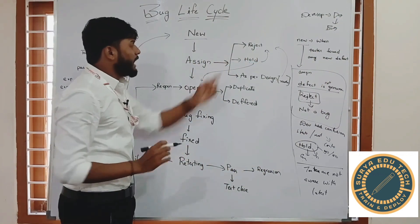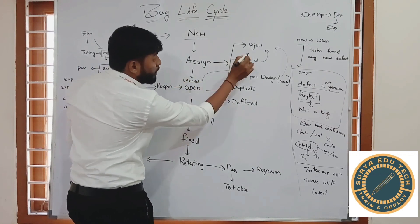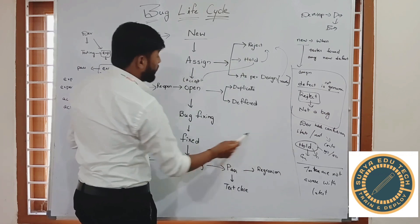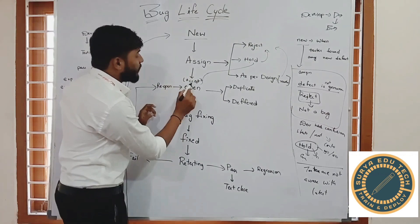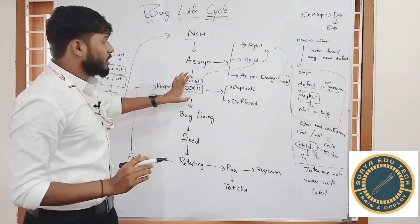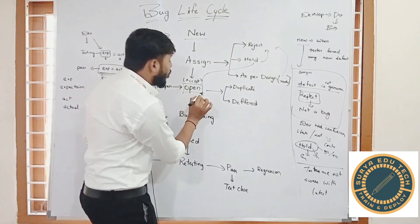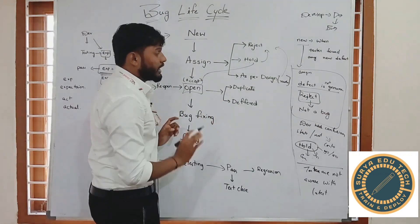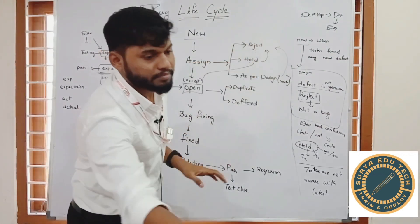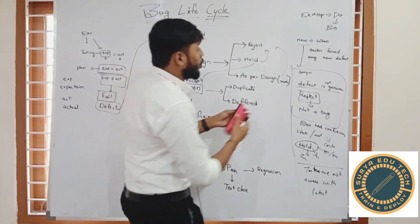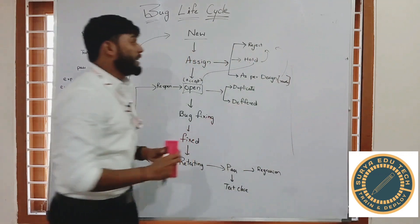If the developer accepts the defect, it is considered a bug and they open it for fixing — entering the 'Open' phase. If the developer rejects it, it goes to 'Not a Bug'. In the open phase, we need to check for duplicate defects.